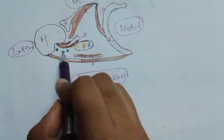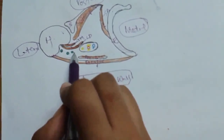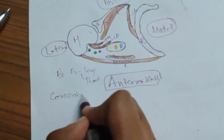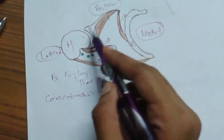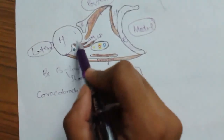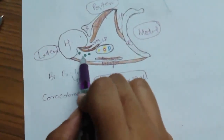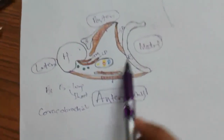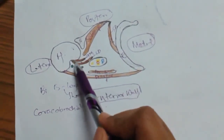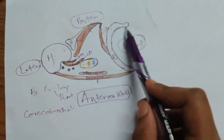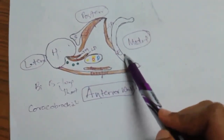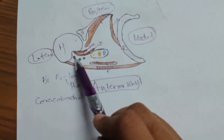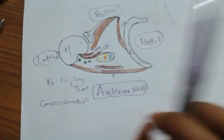The lateral wall is formed by the humerus along with three tendons: the tendon of biceps brachii long head, the tendon of biceps brachii short head, and coracobrachialis. These originate from the scapula and insert into the humerus, which you will study in the arm muscles.